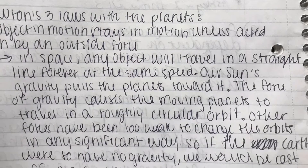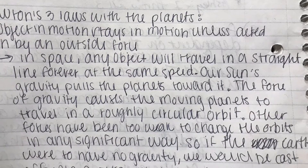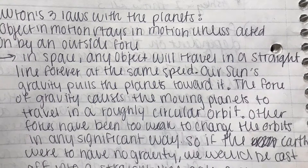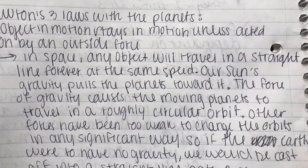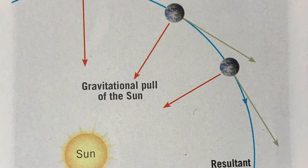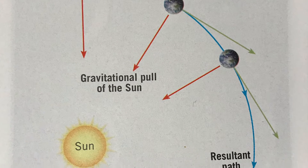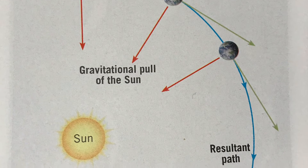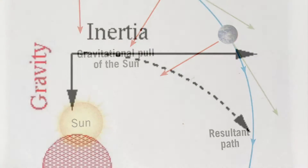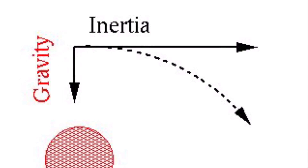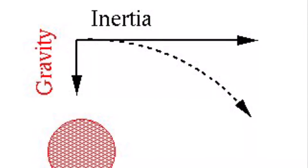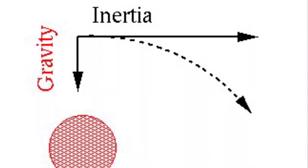At a more scientific standpoint, the force of gravity causes the moving planets to travel in a roughly circular orbit. Other forces have been too weak to change the orbits in any significant way. So if the earth were to have no gravity at all, we would be cast off into a straight line path in space forever.